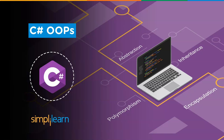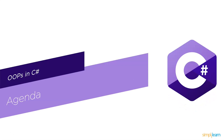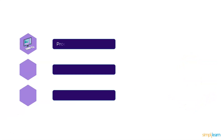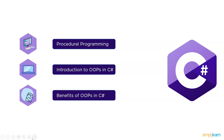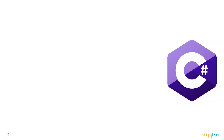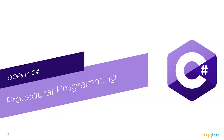Without any further ado, let's get started with the agenda for today's session. First, we will define object-oriented programming in C#. Following that, we will discuss the differences between object-oriented programming and procedural programming. Later, we will look into OOP in C#, and last but not least, we will discuss the benefits of object-oriented programming in C#.